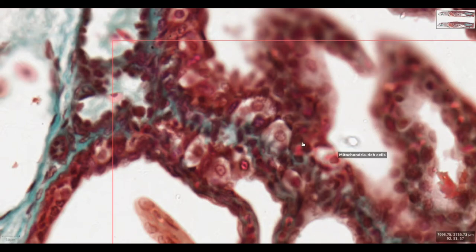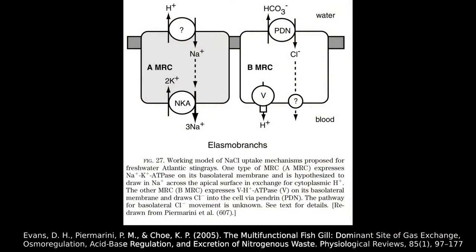The mitochondria-rich cells, often shortened to MRC, are used to regulate the salt content of the blood and the acid-base balance. Some of them are specialized for hydrogen ion excretion, whilst another subpopulation of these cells express proteins that will excrete bicarbonate ions.